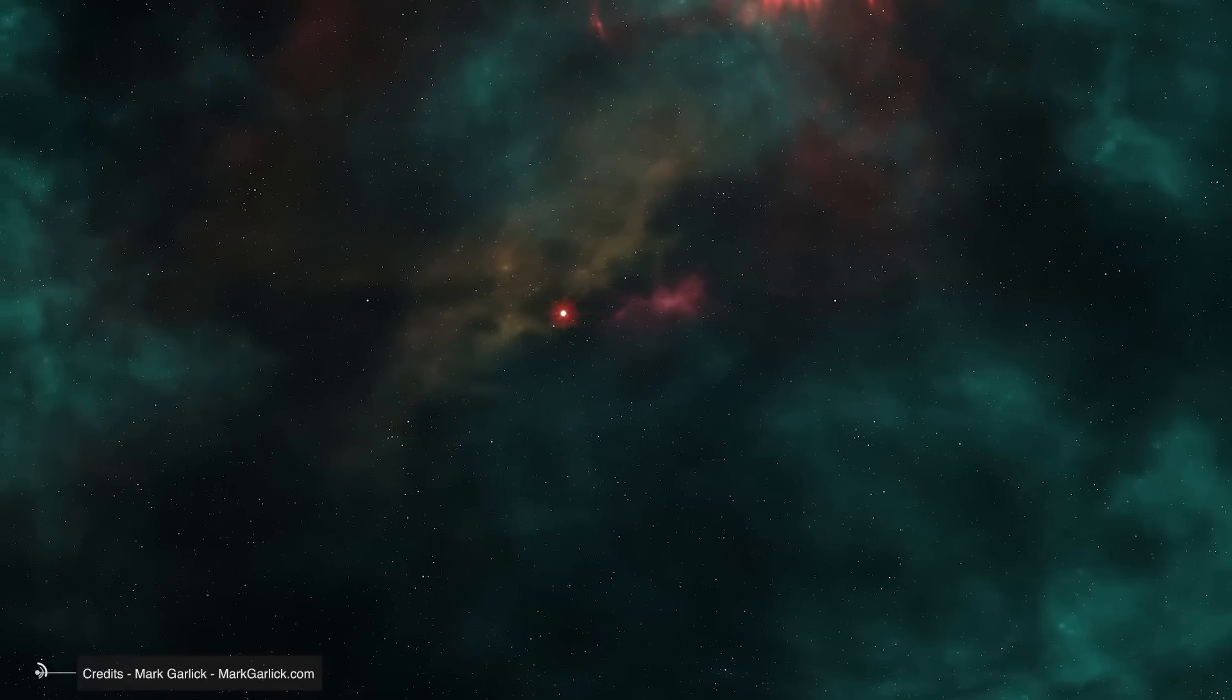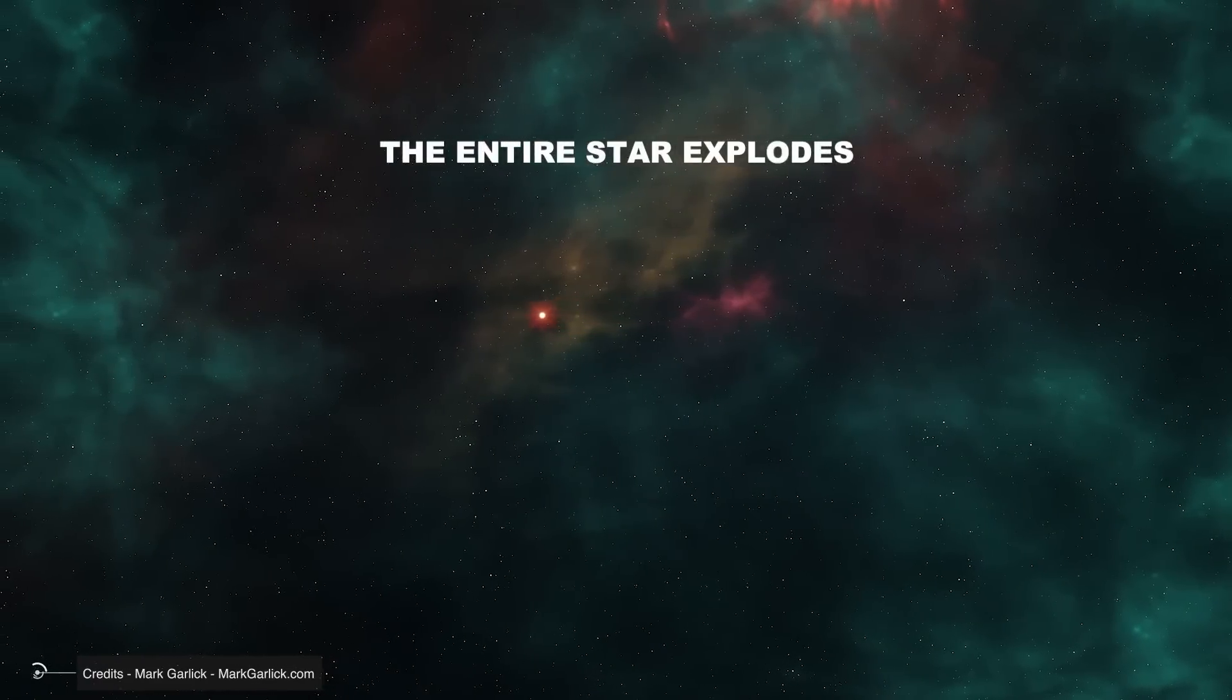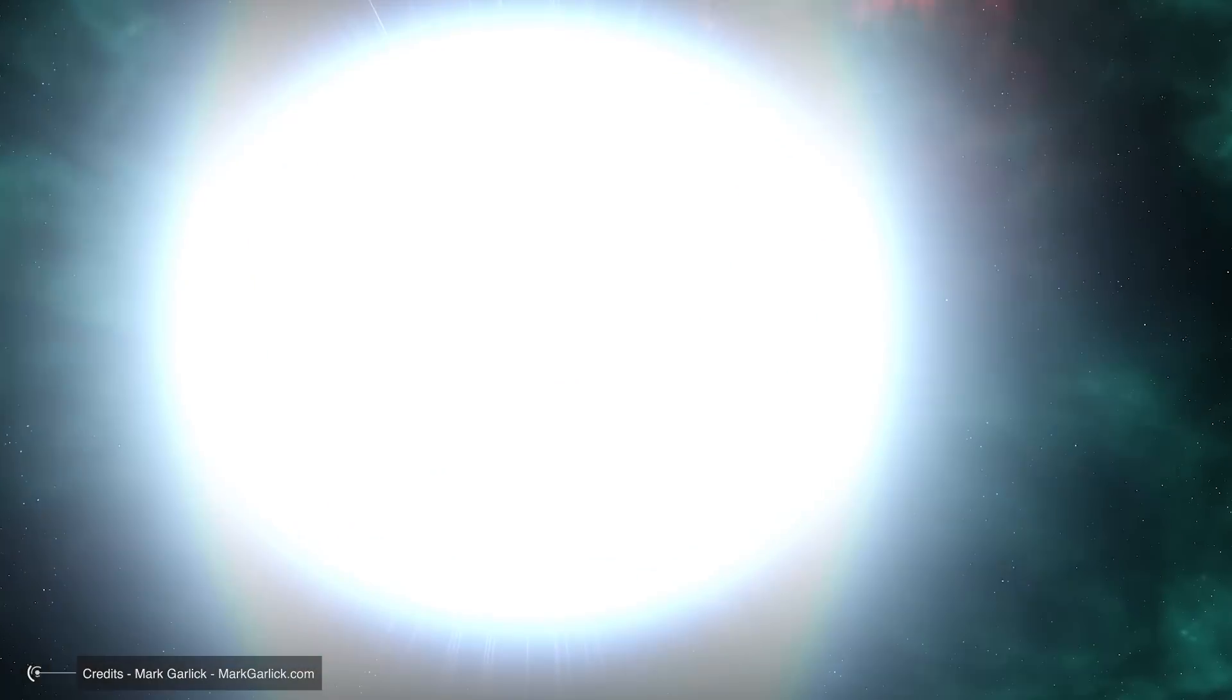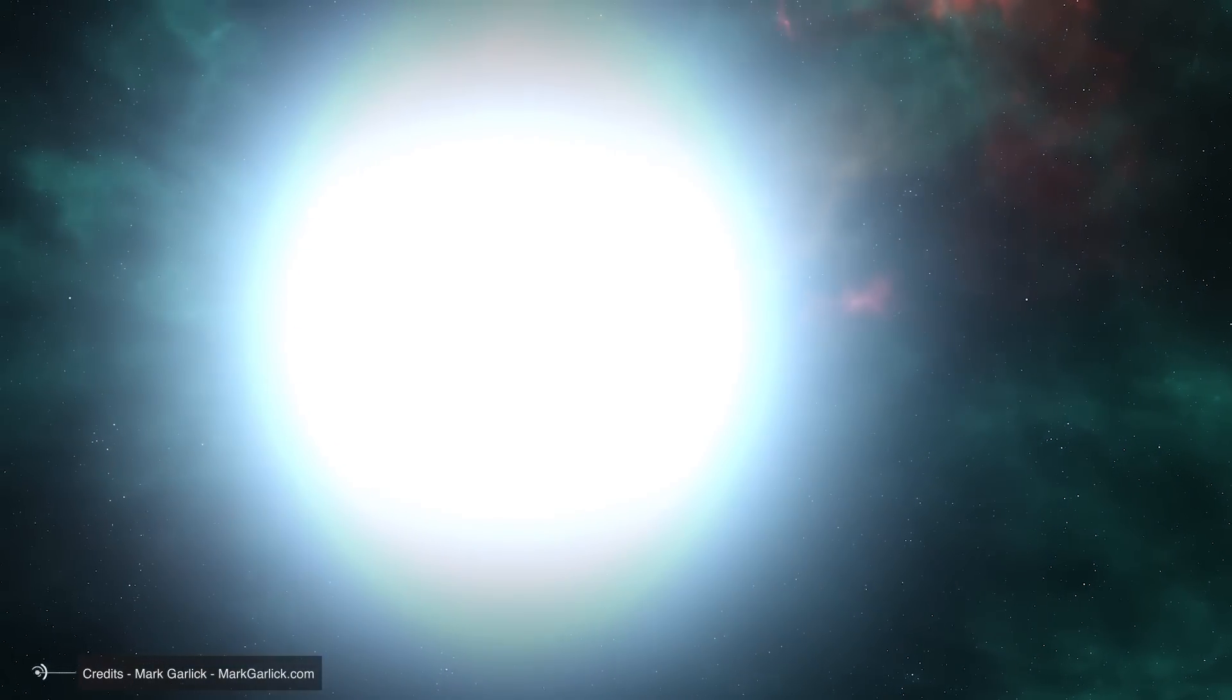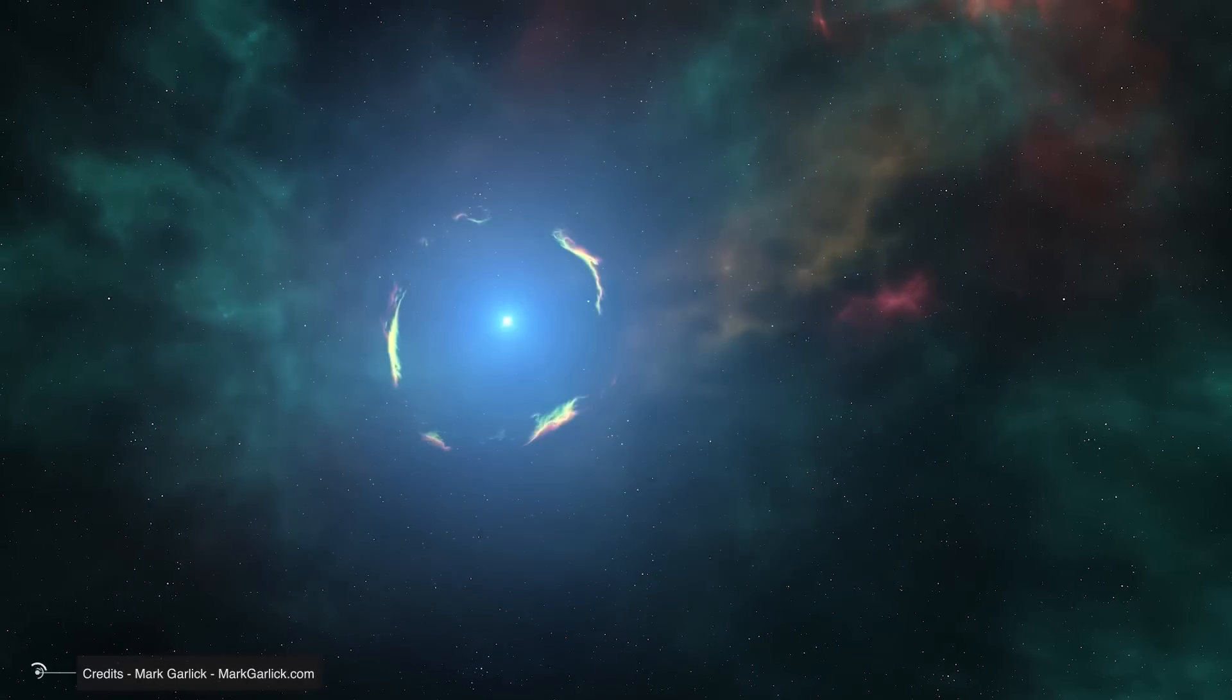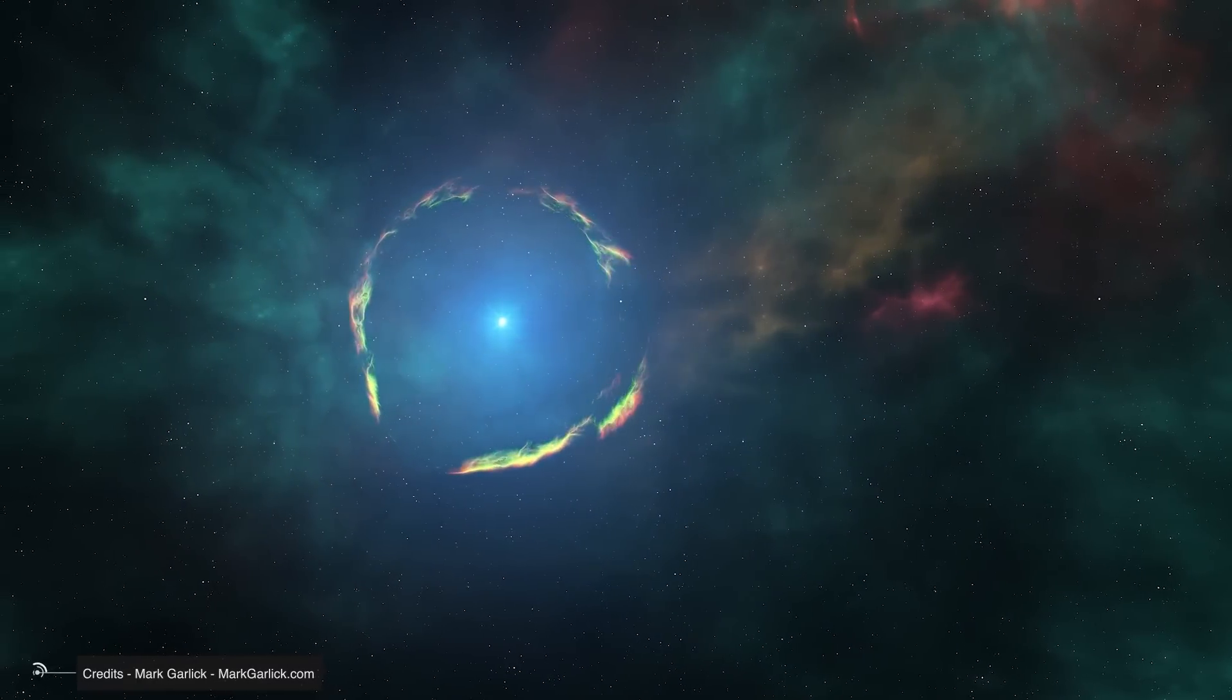In the case of a supernova, however, the entire star explodes following thermonuclear reactions occurring within it. After the explosion, a nebula can form and a compact object like a neutron star or a stellar black hole may remain at the center. Anyway, back to our topic.